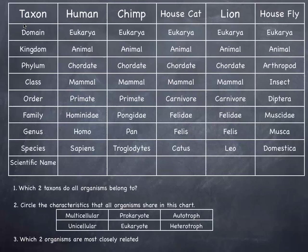It has to be italicized — yes, it's italicized. And the other important thing: the first part of the name is capitalized and the second part is not. So the genus is capitalized and the species epithet is lowercase.